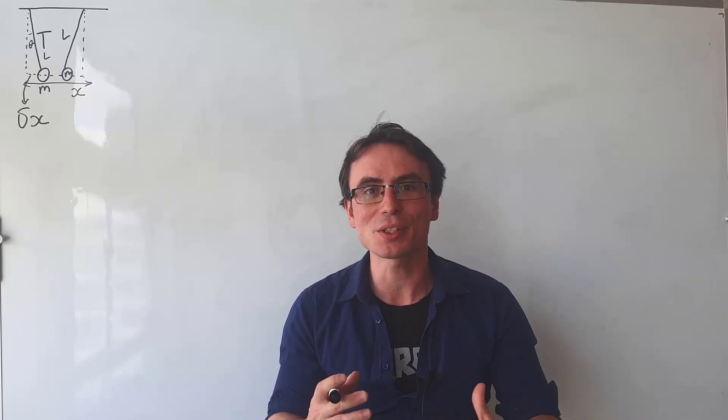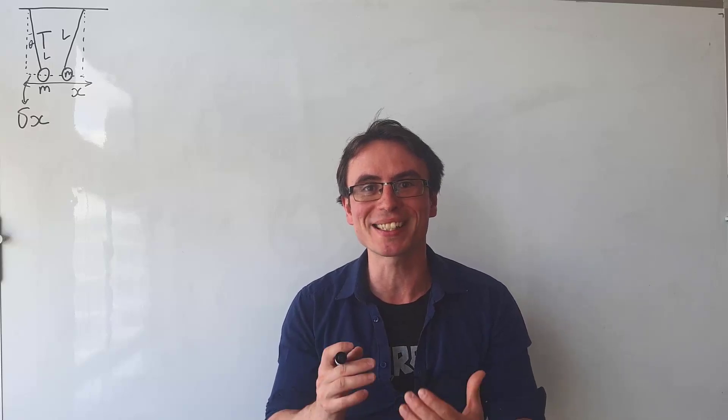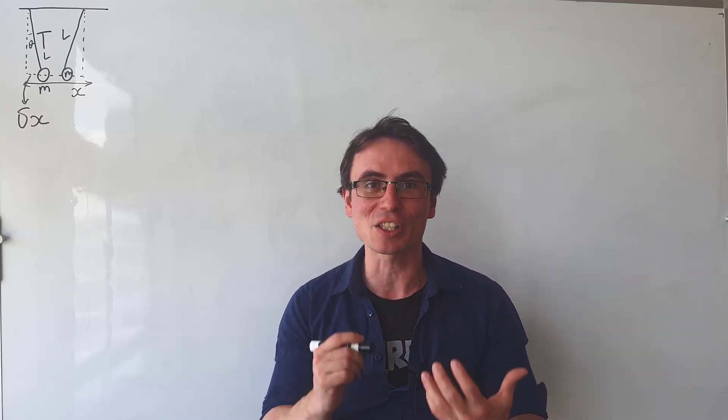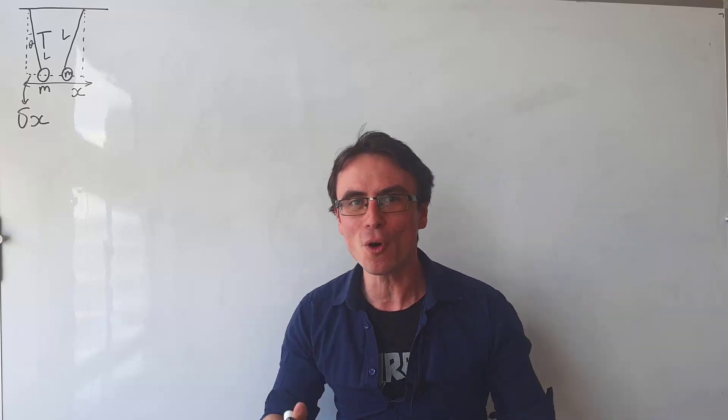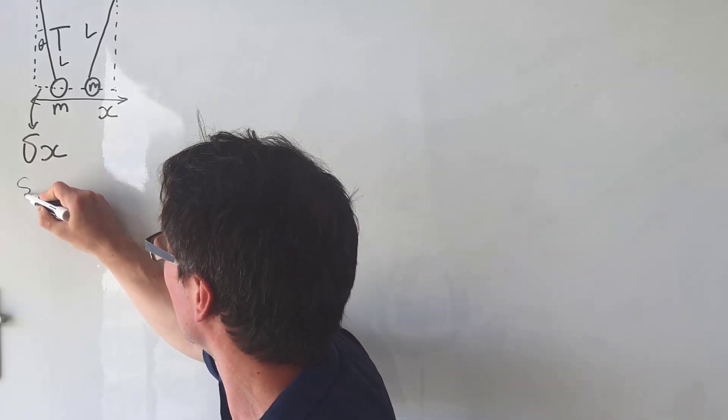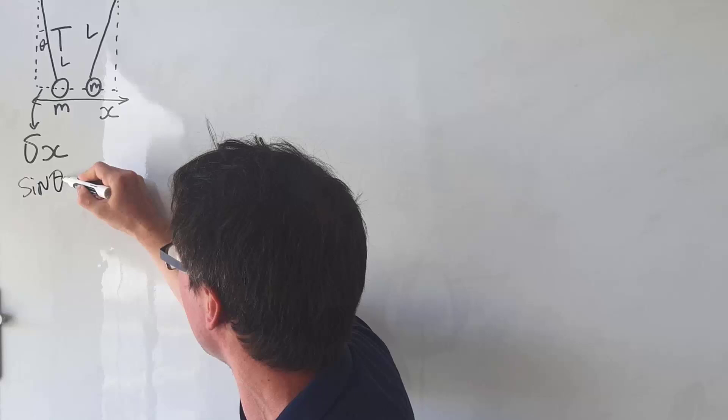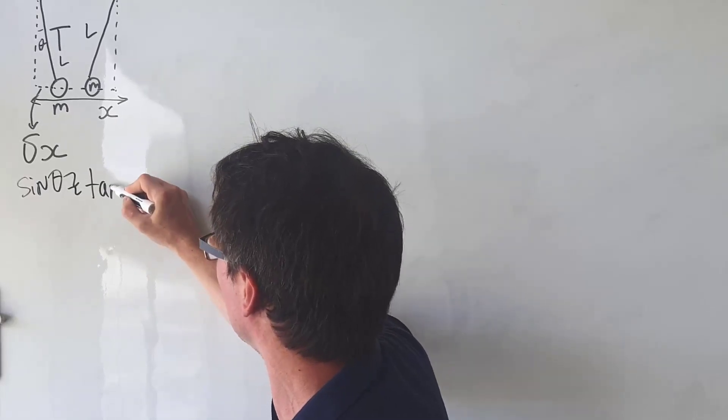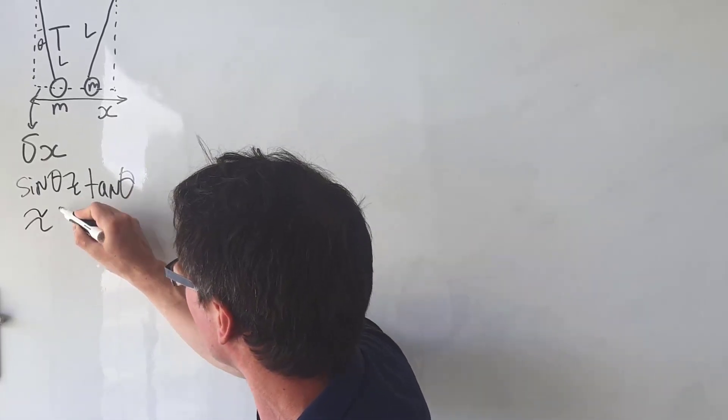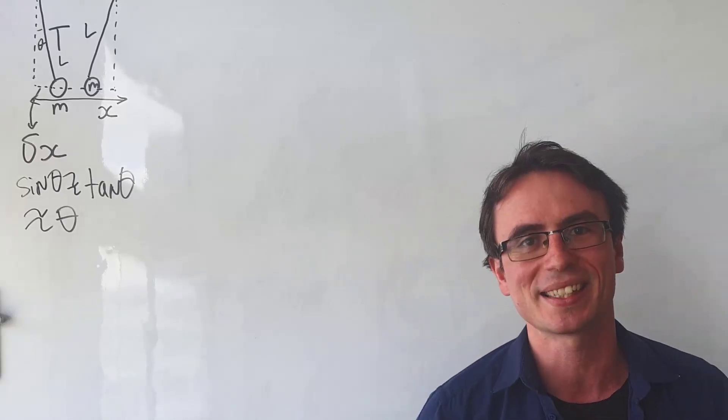Anytime we have a similar situation and we see the approximate sign, what we can use is the small angle approximation. So even before I start the problem, just over here, I'm going to write that sine of theta is approximately equal to the tangent of theta, which is approximately equal to theta itself.